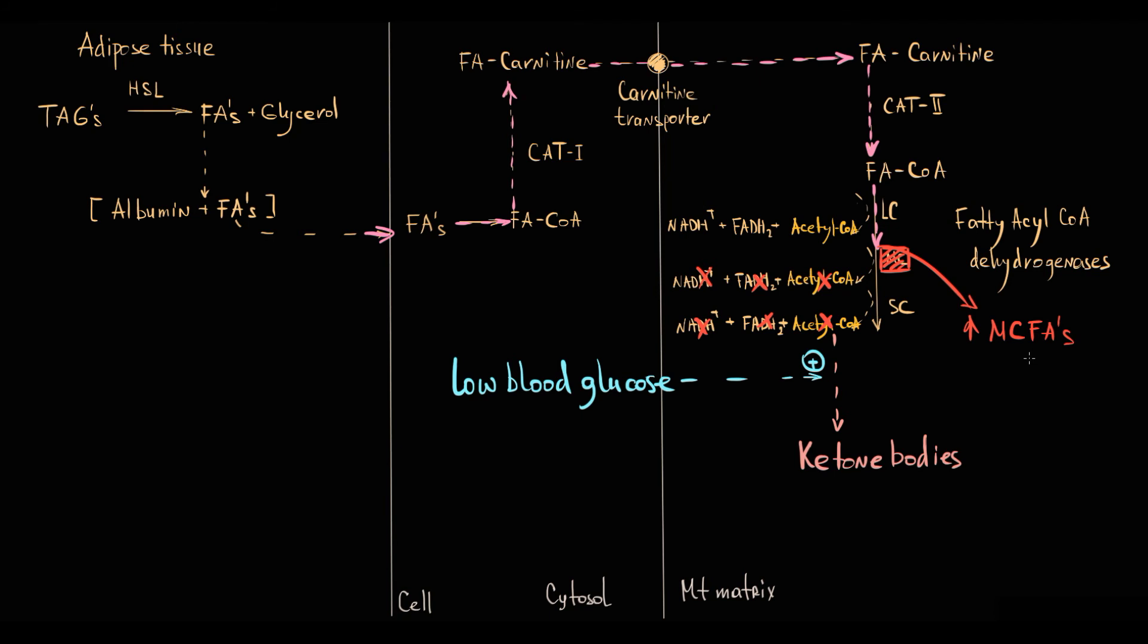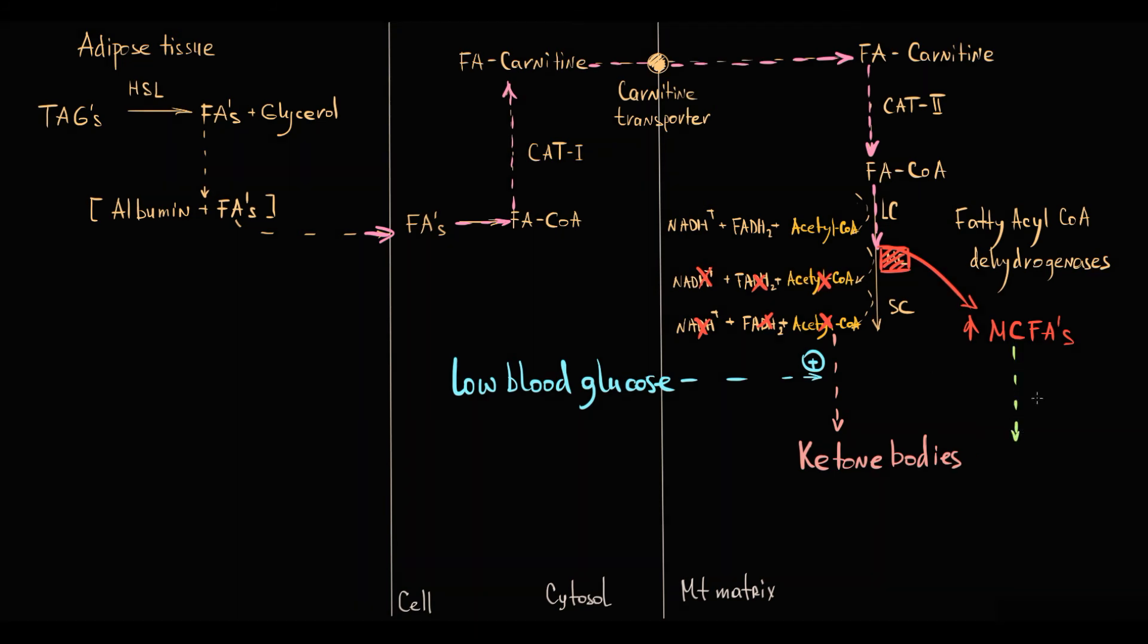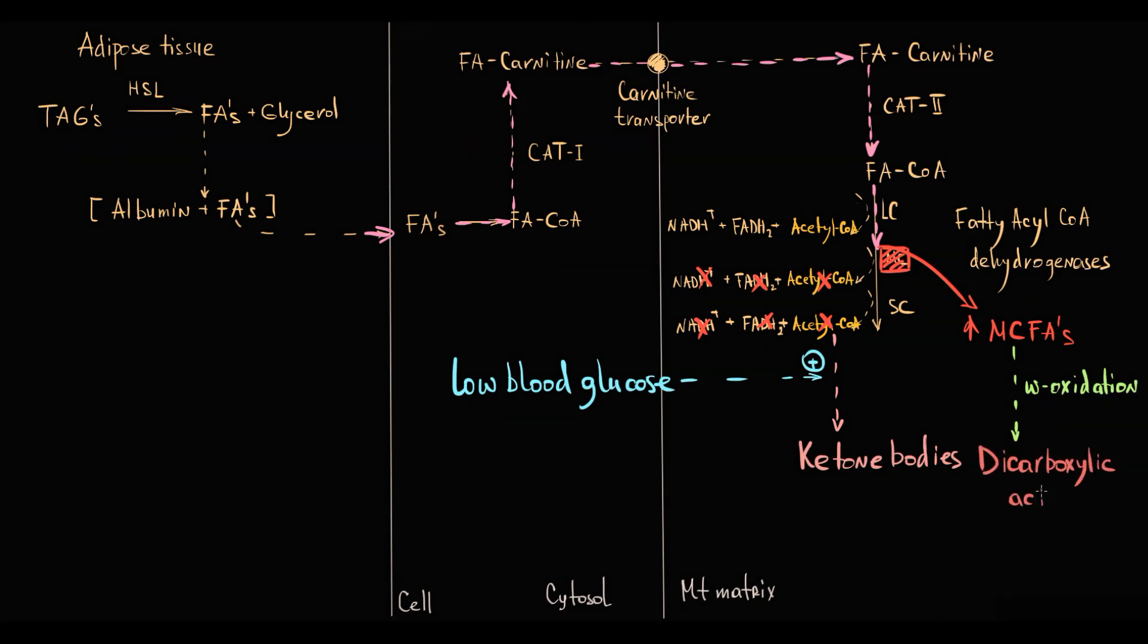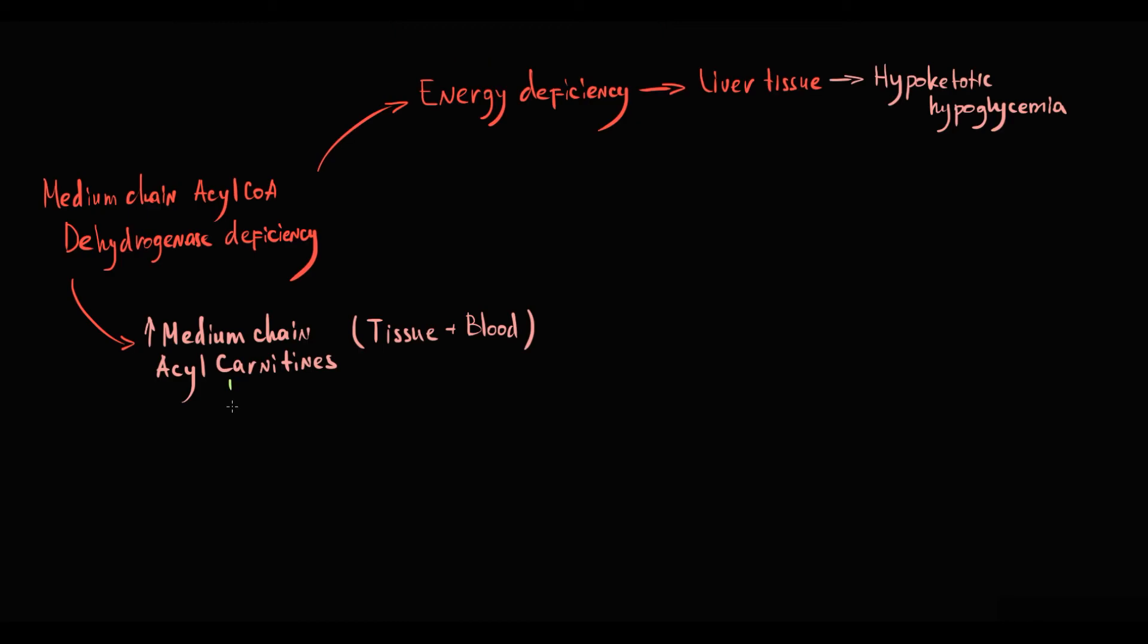This cause massive accumulation of medium-chain fatty acids inside the mitochondria. And some portion of accumulated fatty acids inside mitochondria undergo omega-oxidation that results in production of dicarboxylic acids. And high amount of dicarboxylic acids together with accumulated medium-chain fatty acids cause severe mitochondrial dysfunction.